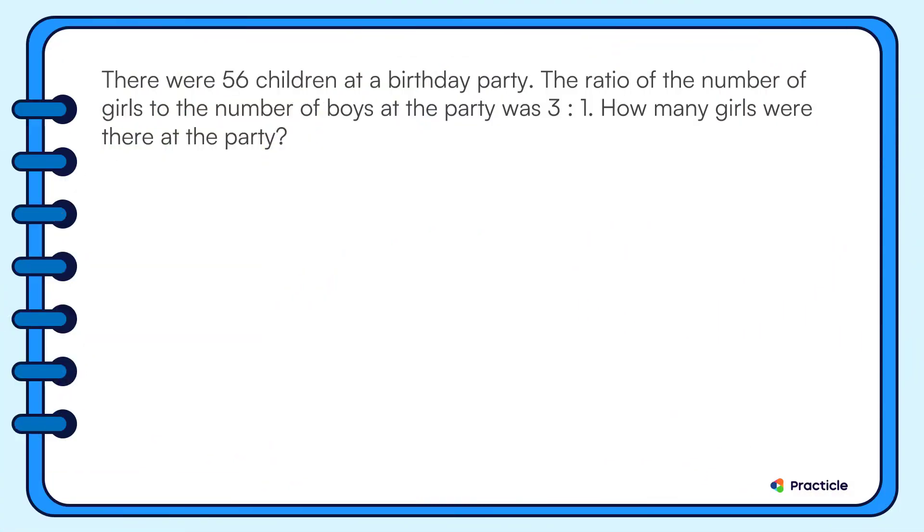Here's the ratio and proportion question that we're going to solve. There were 56 children at a birthday party. This is the total number of children who were at the birthday party.